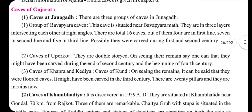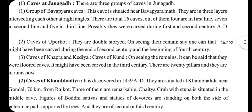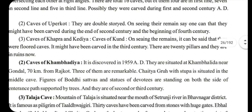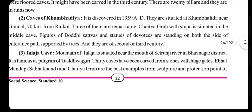The caves of Gujarat are also significant. The caves of Junagadh are very famous, with three groups totalling 16 caves: 4 in the first line, 7 in the second line, and 5 in the third line. This is known as the group of Bawapyara caves. The Uparcote caves are double-storeyed and were carved at the end of the 2nd century. The third group, Khapra Kodia caves, are floored caves carved in the 3rd century.